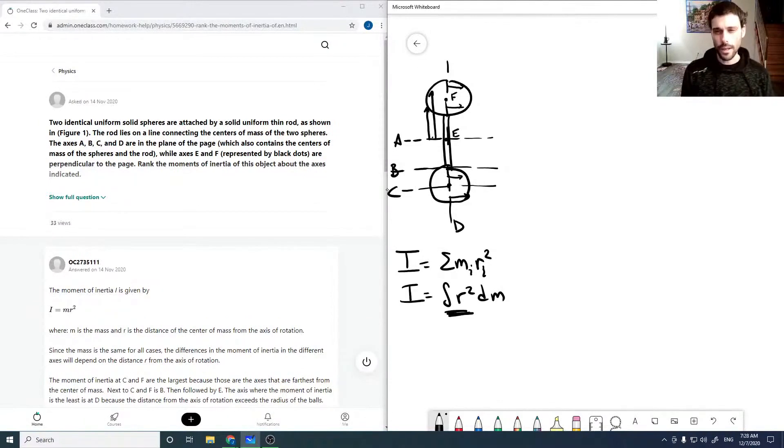If we look at our D axis here, we can see that all the vectors that you draw would be small, and so the D axis is likely to have the lowest moment of inertia.